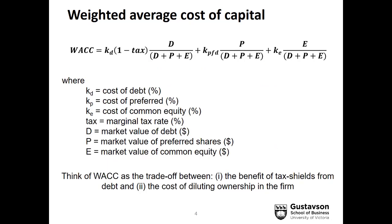Let's look more closely at the components of this formula. We're using K to refer to cost, where the subscript D is for debt, P is for preferred, and E is for common equity. The cost is going to be in percent. Cost of debt is going to be adjusted for taxes — later we'll explain that this is because of the benefit of tax shields. Both preferred and common are not tax adjusted because dividends are not paid until taxes have already been paid.